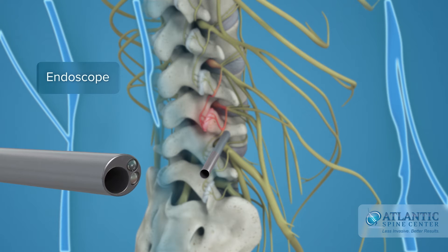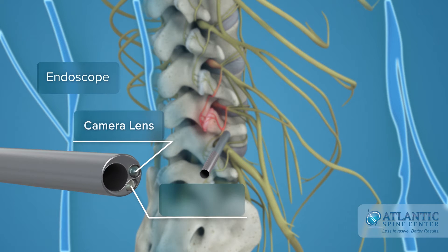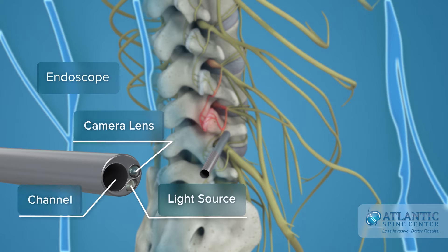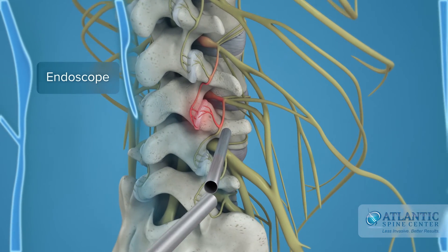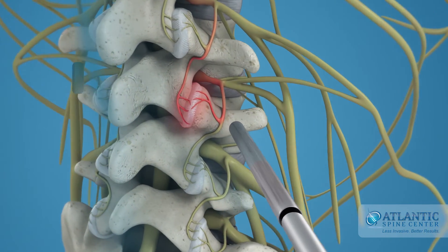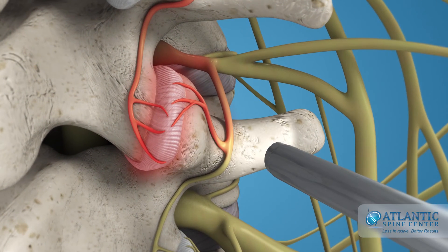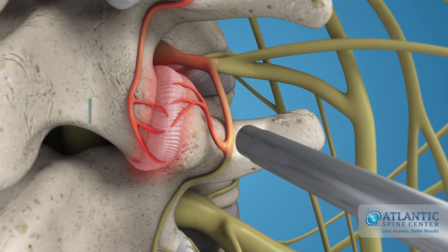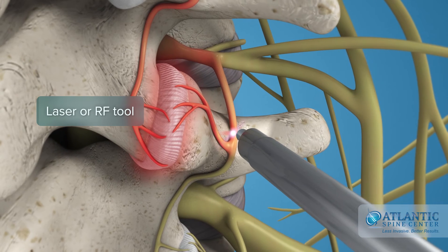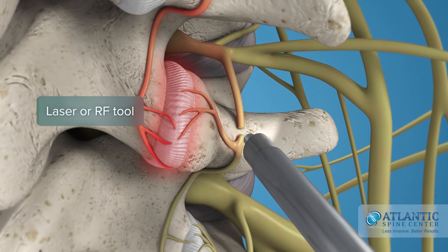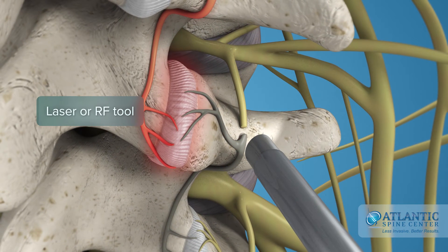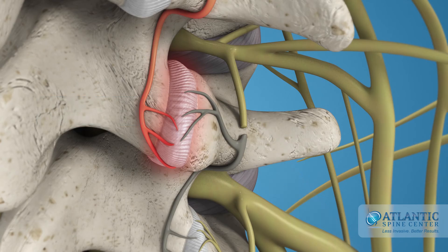The endoscope has a built-in camera lens, light source, and a channel for various fine instruments. It is placed through the tube and the small nerve branches are identified.